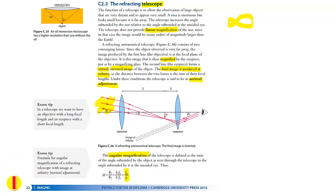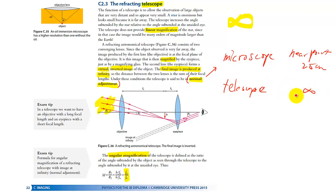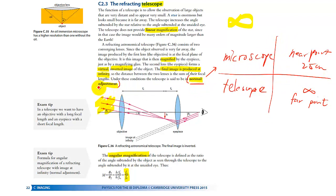Be careful with the term 'normal adjustment.' If you recall from the previous video, normal adjustment when talking about a microscope refers to when the image is forming at the near point, which is 25 cm. For a telescope, the image forms at infinity, which we call the far point. So this is the so-called normal adjustment for these two optical instruments.